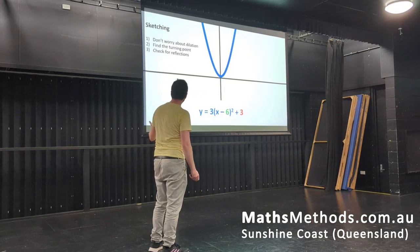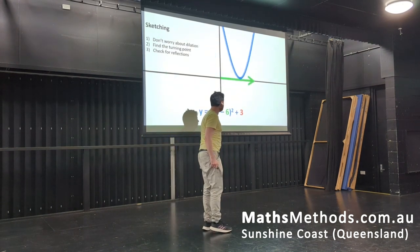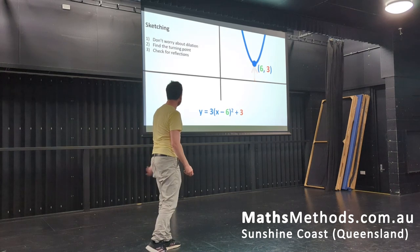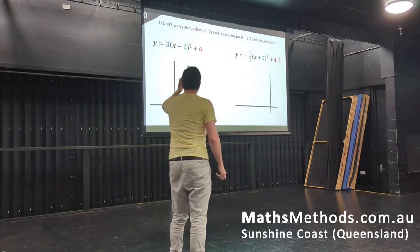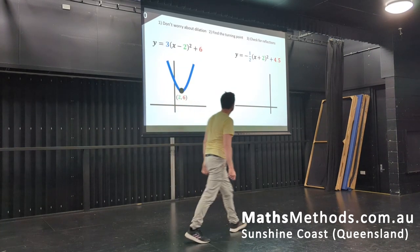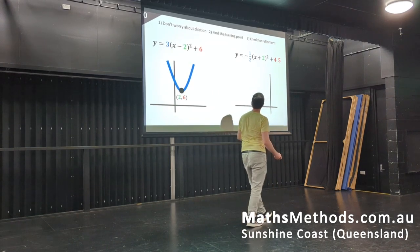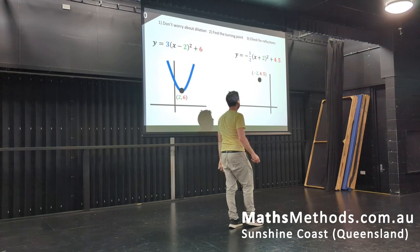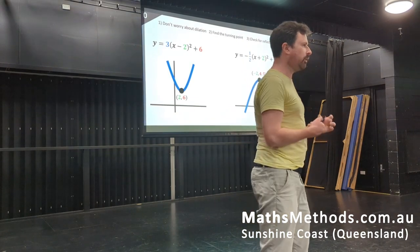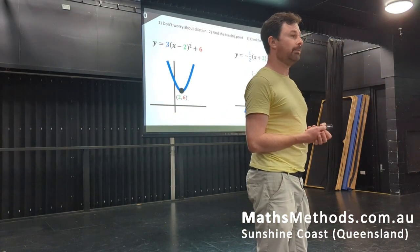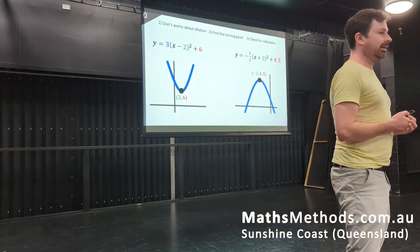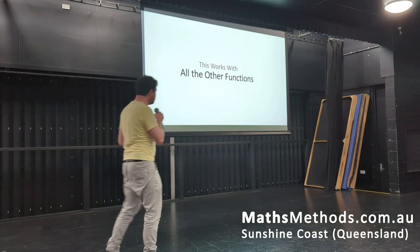So when sketching, you don't worry about dilation. You find the turning point, move it over by 6, move it up by 3. Then you want to check for reflections as well. Same thing again — turning point 2, 6, sketch it in. Turning point negative 2, 4.5. Then we notice there's a reflection, so it's going to flip around. One of the main things I like people to be able to do is to sketch something in about 10 or so seconds, and this works with all the other functions.